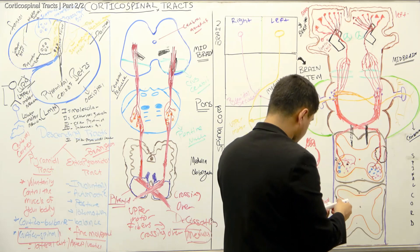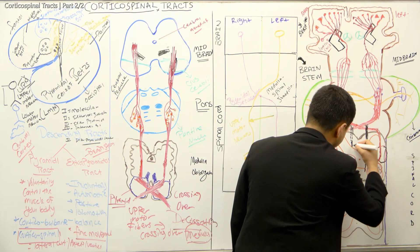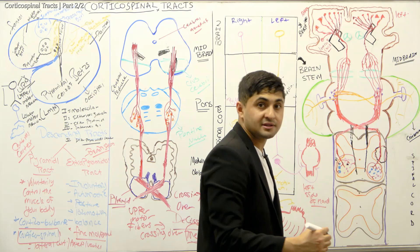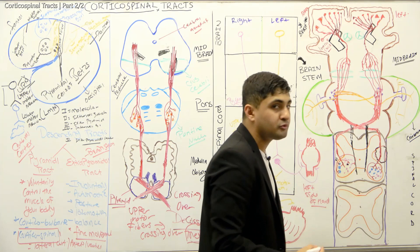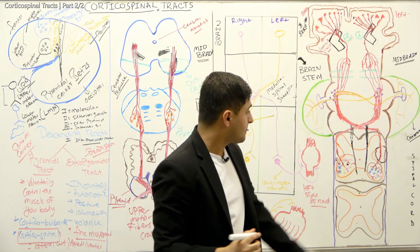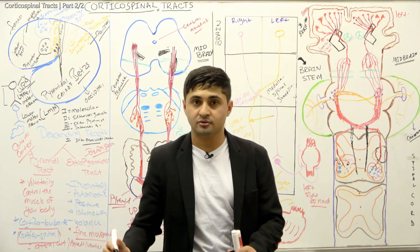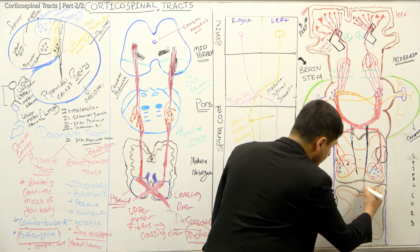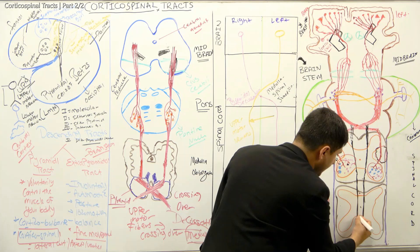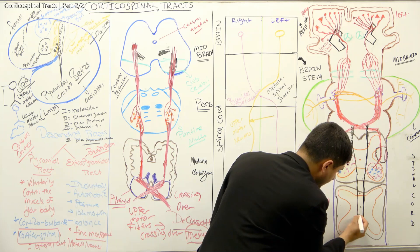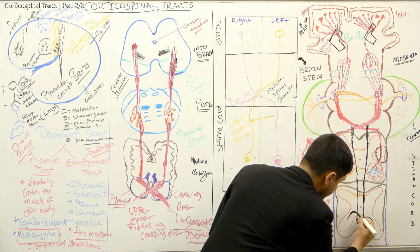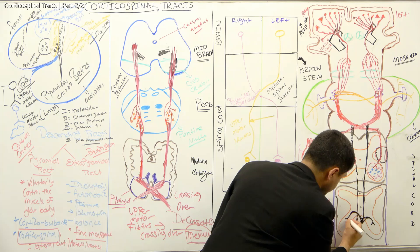The remaining 10 to 15 percent of fibers that didn't cross over in the medulla are the ipsilateral fibers. They form the anterior or ventral corticospinal tract and come down, crossing over at the spinal cord level — either at the cervical or thoracic regions. They then synapse at the lower motor neurons in those spinal cord levels.